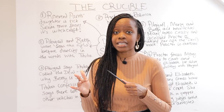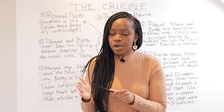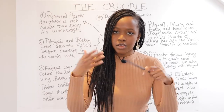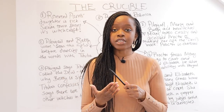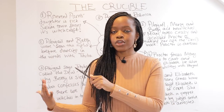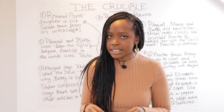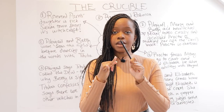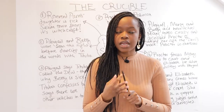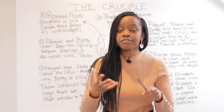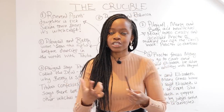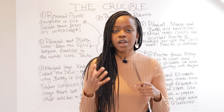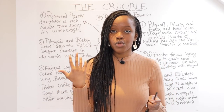Parris also realises that Abigail was lying all along. Attempts are made to get John Proctor to confess guilt — to have a pact with the devil — in order to spare his life, but he refuses. The play ends with the innocent John Proctor and Rebecca Nurse being killed. We also learn that the Putnams benefit financially from these killings by taking over the property of the condemned.